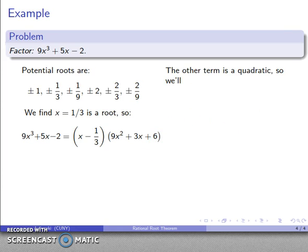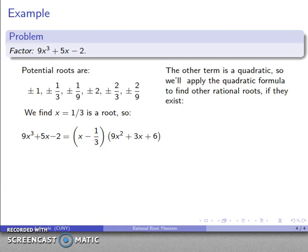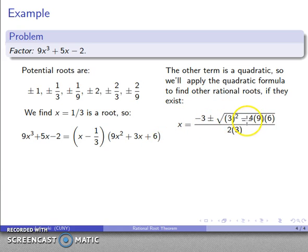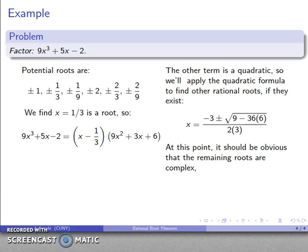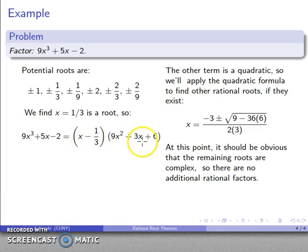Now I want to see if I can factor 9x² + 3x + 6. It's quadratic, so let's apply the quadratic formula to find any rational roots. Substituting a = 9, b = 3, c = 6 into the formula (−b ± √(b² − 4ac)) / 2a, the arithmetic reveals we'd be taking the square root of a negative number. That means the remaining roots are complex numbers, there are no additional rational factors, and here is the complete factorization as far as we're able to take it.